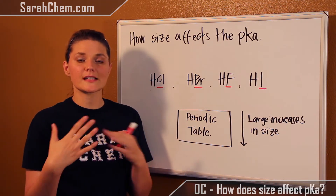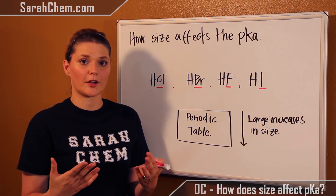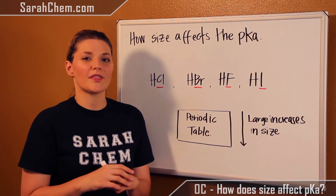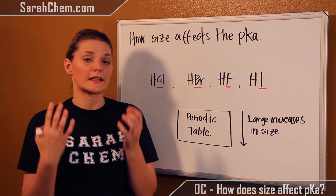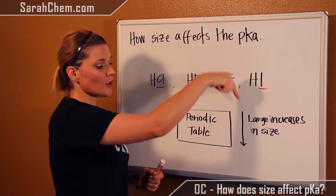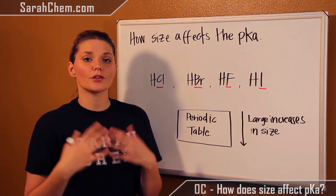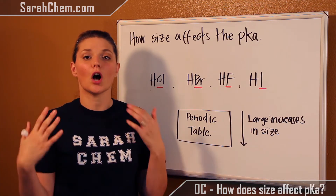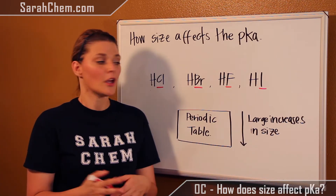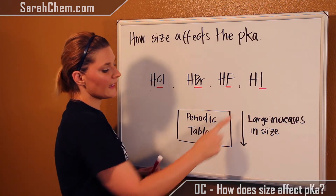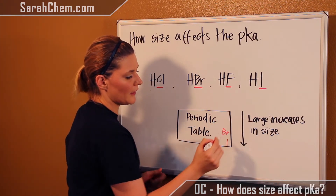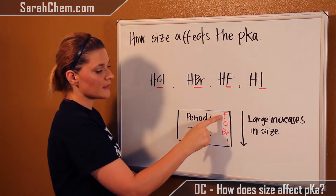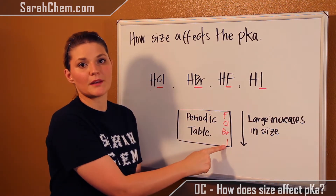It's important to remember that there are size changes and trends on the periodic table. Typically you see a decrease going across a row, but that decrease isn't massively significant. However, when you start going down a column, those are large increases because you're starting to add additional energy layers onto the atom. So iodine is the furthest down, right above it would be bromine, then chlorine, and fluorine. Fluorine would be the smallest and iodine would be the biggest.